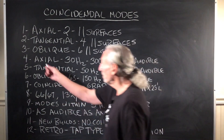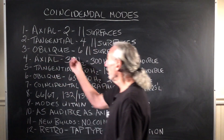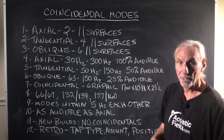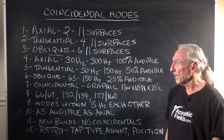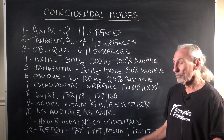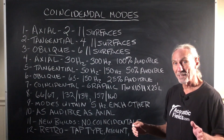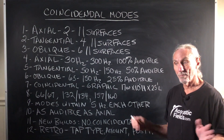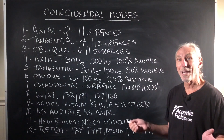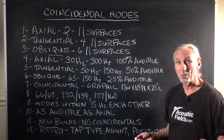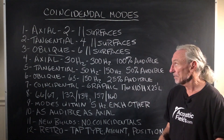The oblique mode involves everything — all six surfaces: floor, ceiling, and all four walls. So all of these surfaces are working against us. Most of the time, 95% of the time, the dimensions are working against us.